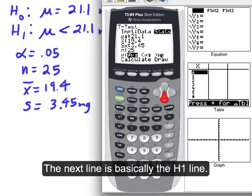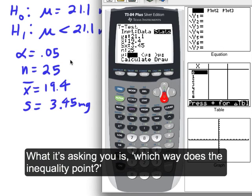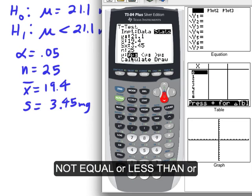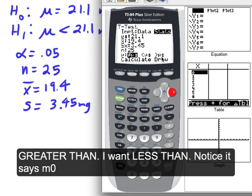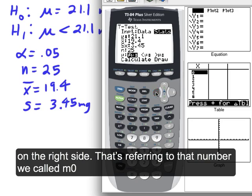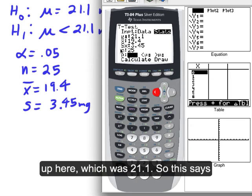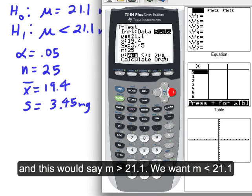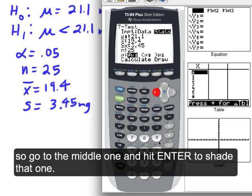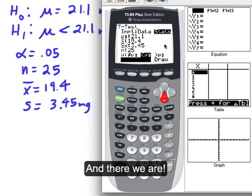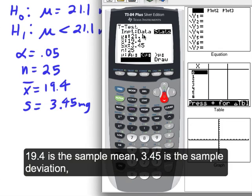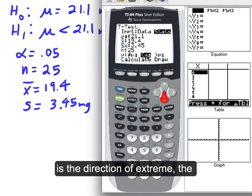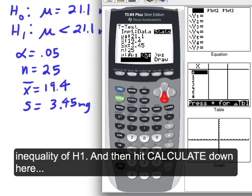X bar, that's the sample mean that we had, is 19.4. S is the sample deviation that was given to us as 3.45. N is the sample size, they were 25. Now the next line, this is basically the H1 line. And what it's asking you is, which way does the inequality go in H1? So if I look at my H1, my inequality is mu is less than 21.1. So my choices here are not equal, less than, or greater than. And I want less than. And notice it says mu zero on the left, on the right side. That's referring to that number that we called mu zero up here, 21.1. So when this says mu is not equal to 21.1, this says mu is less than 21.1, and this would say mu is greater than 21.1. We want mu is less than 21.1. So go to the middle one and hit enter to shade that choice. And there we are.